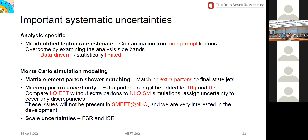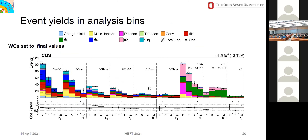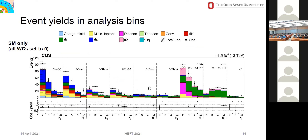I noticed on one of the slides you showed the event yields where the Wilson coefficients are filling the gap in some bins between data and the standard model. I'm wondering: would this difference between data and standard model have anything to do with theory modeling uncertainty for some standard model processes? It could — that plot is out of the box, but we also did a standard model fit. The discrepancies did improve, and our nuisance parameters do allow us to account for some of these discrepancies. So yes, to some extent, these model uncertainties can account for some of the discrepancies.